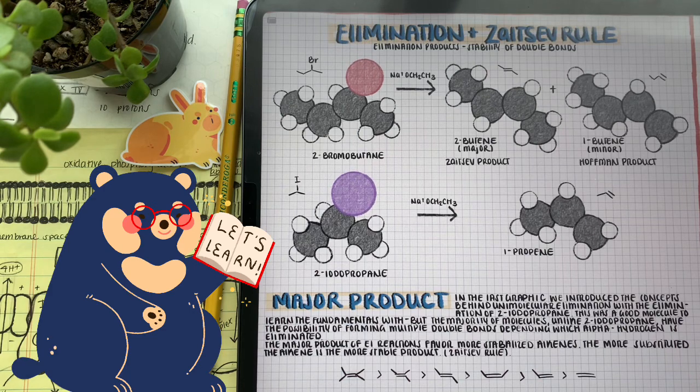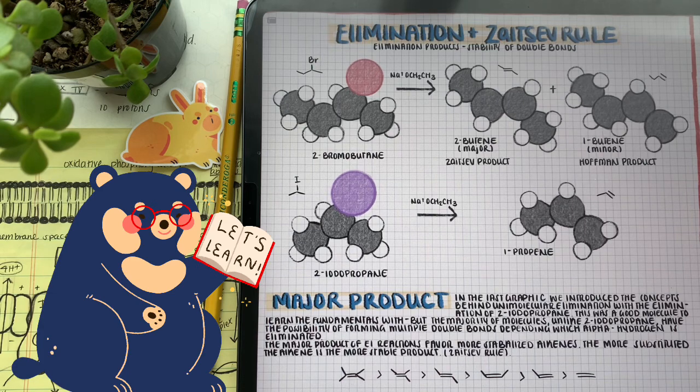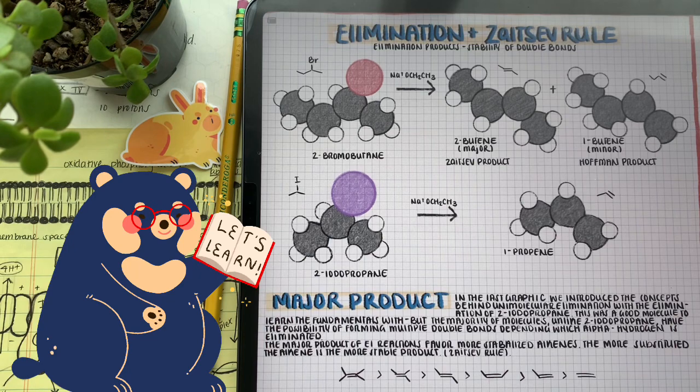Remember, when we talk about double bonds and substituted regions, we got to remember that the amount of alkyl chains or functional groups on the double bond result in it being substituted.